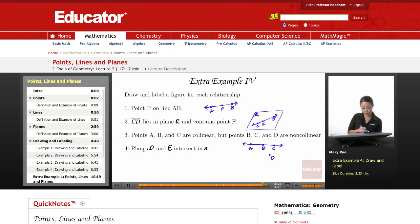Okay, the next one. Planes D and E intersect in N. Now this is a line because it's a lowercase script letter. So here's one plane.